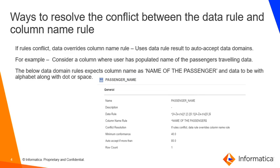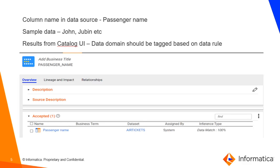Let's consider an example of a column where the user has populated the name of passengers. The data rule is expecting data with alphabets along with dots or spaces, and the column name rule is strictly expecting the column name to be 'name of the passenger.' For demonstration, we have considered a column with a different name — 'passenger name' instead of 'name of the passenger' — and data as John, Zubin, and so on. In this example, the column name does not match the rule, whereas the data match is 100%. Hence, the data domain 'passenger name' is auto accepted, considering the data rule results over the column name rule.